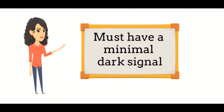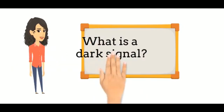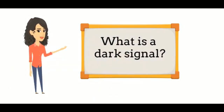A detector must have a minimal dark signal, also called dark current. The dark signal is the signal when no light impinges on the detector.